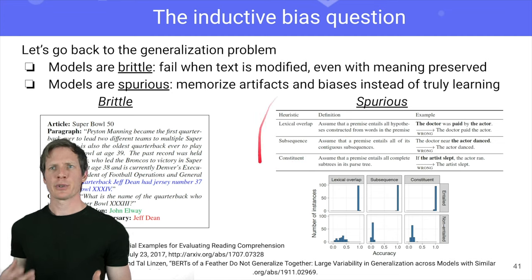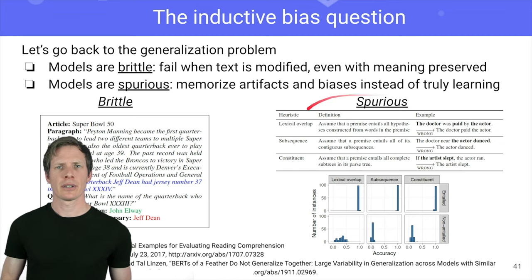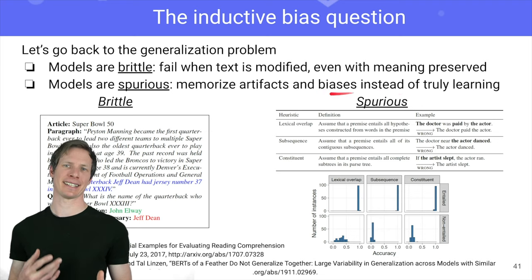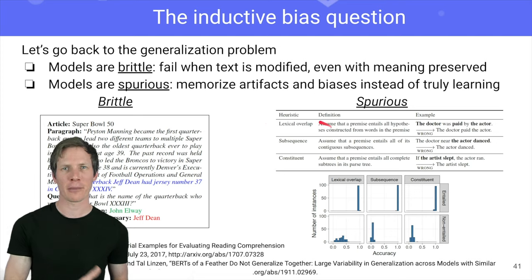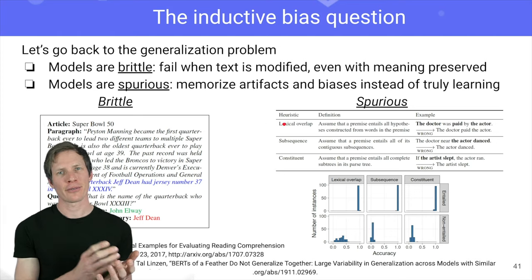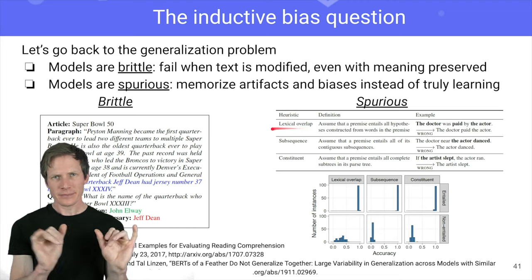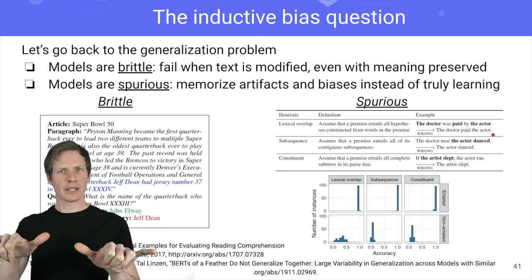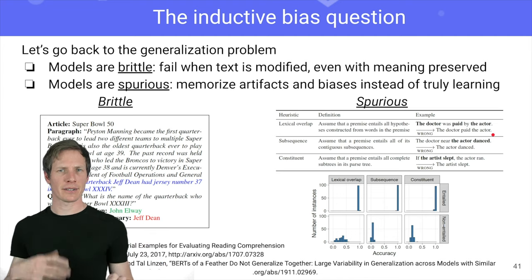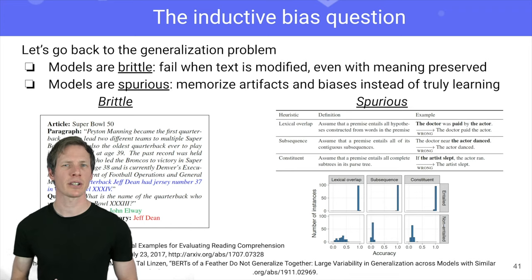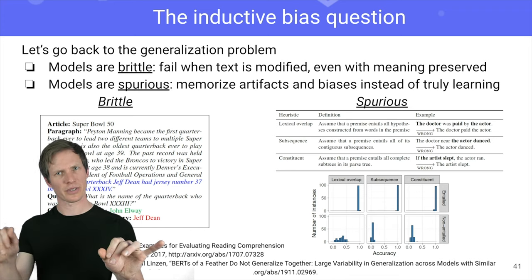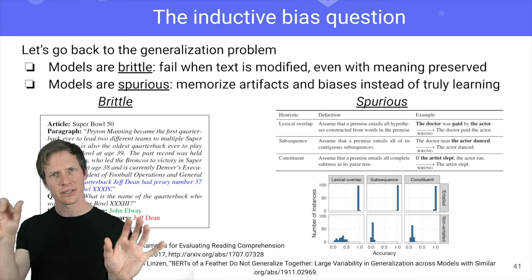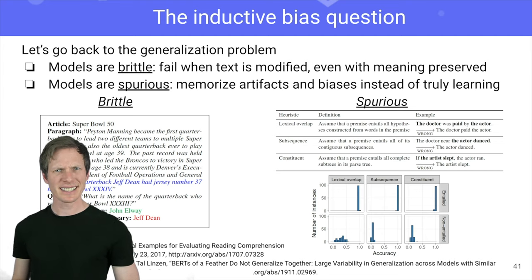Our models are also spurious. Spurious means that they will do the least amount of work to get the best performance. If there are easy heuristics they can leverage — for instance, lexical overlap — when you have a lot of overlap on the two sentences of MNLI, the model will quickly learn that a lot of overlap means the right classification should be entailment. But this is not what we want. We want the model to get the semantic meaning of the sentence, not just stay on the surface form or the lexical overlap heuristics. So this is called spurious.